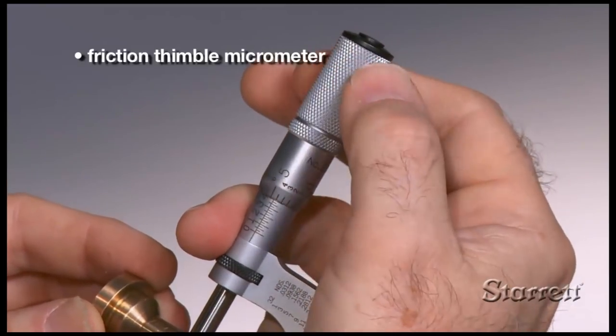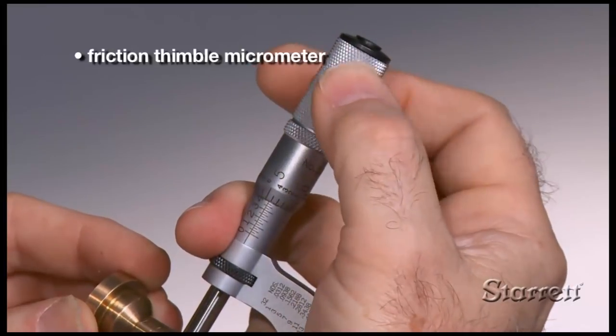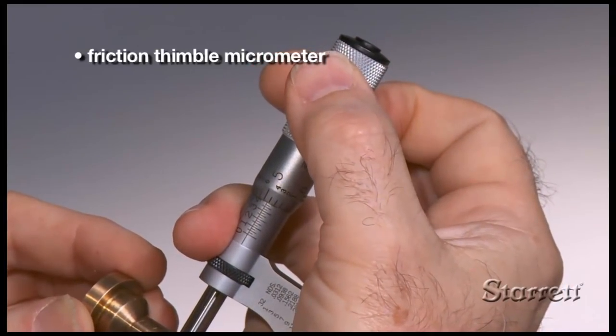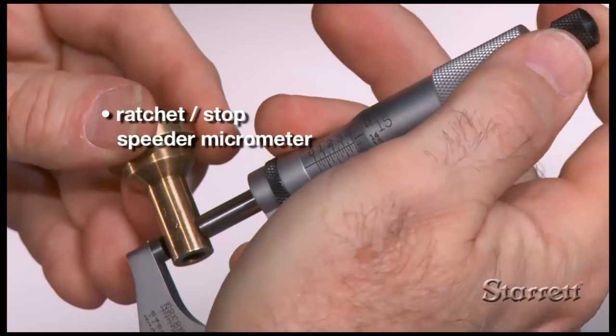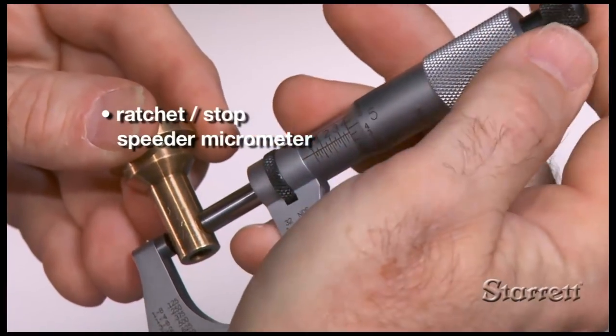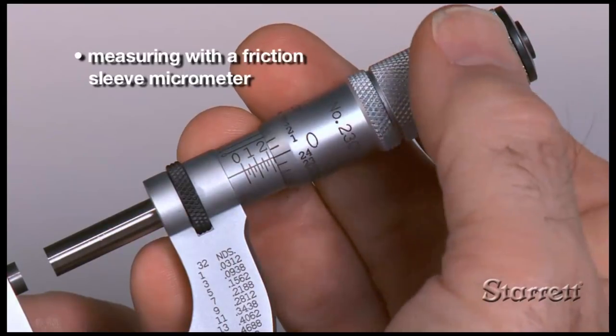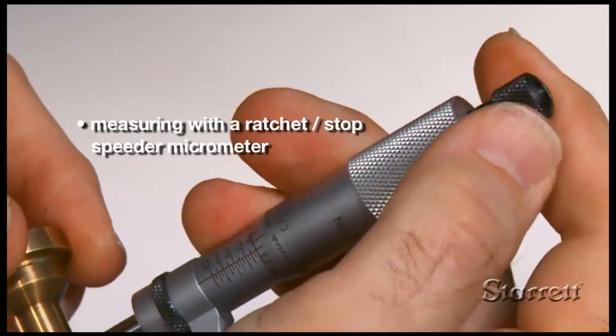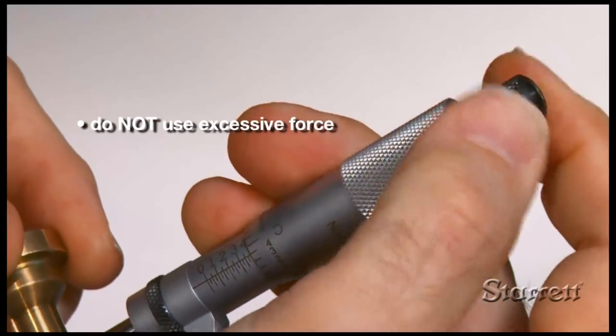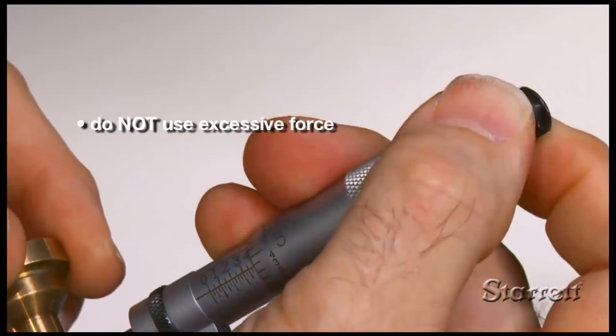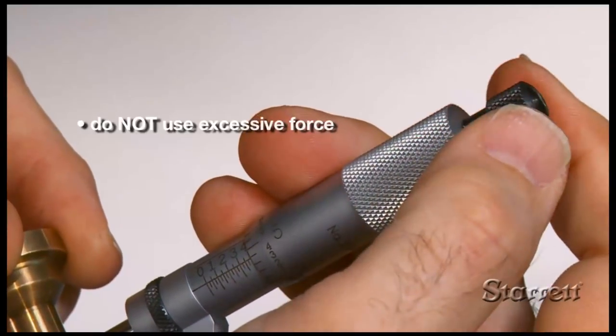Reliable repeatability depends on applying uniform pressure from one measurement to the next. Micrometers have either friction thimble or ratchet stop speeder to help ensure uniform pressure. Move the thimble with your right hand, thumb, and index finger on the friction thimble or ratchet stop. Don't use excessive force. Light but firm contact pressure ensures accurate measurements.